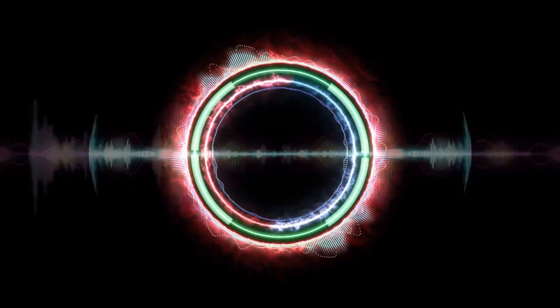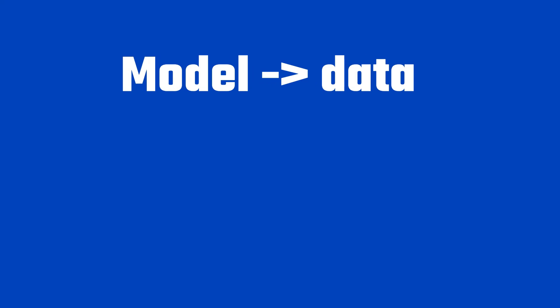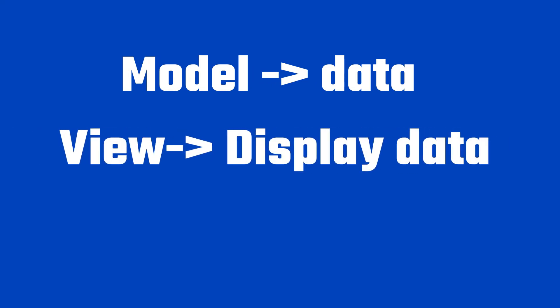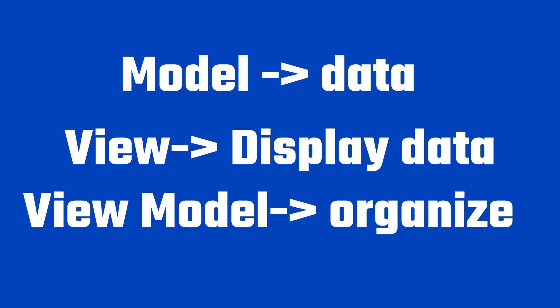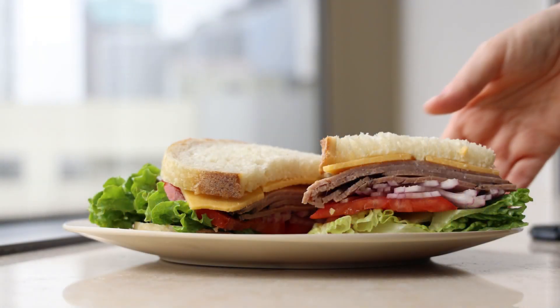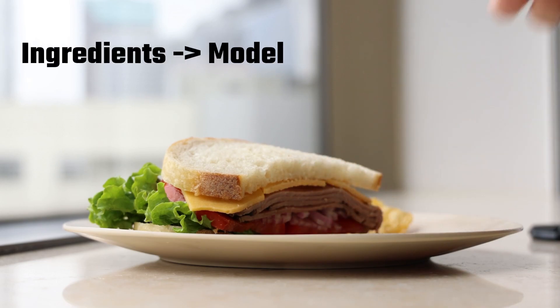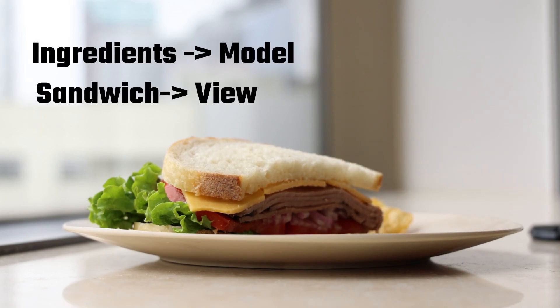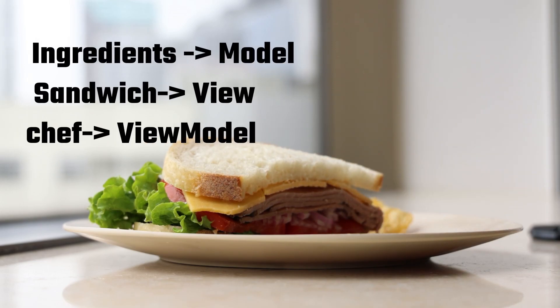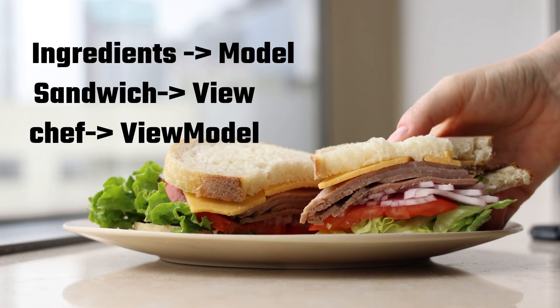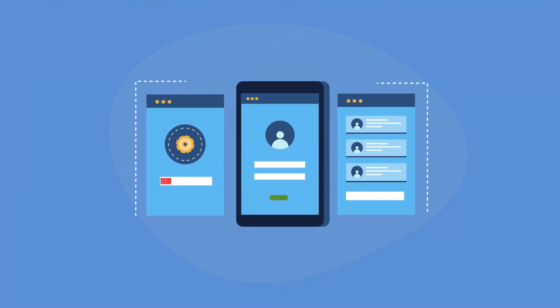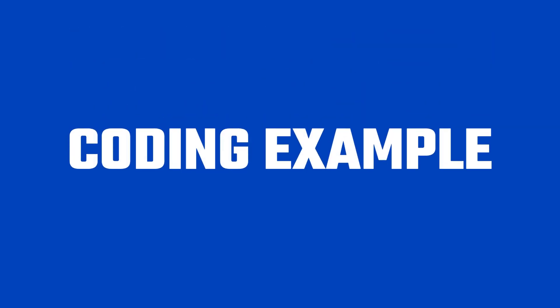So why is MVVM cool? It keeps things tidy. The model knows about the data, the view knows about displaying stuff, and the view model makes sure they work together without any chaos. Imagine making a sandwich: the ingredients are like the model, the sandwich is the view, and the chef is the view model. Each part does its job and you get a delicious sandwich in the end. That's MVVM for your app — making sure everything works together smoothly. Now let's see a simple example of an app that implements MVVM architecture in Android.